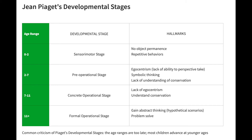Finally, a child gains the ability to understand symbols in the pre-operational stage. For example, a 5-year-old can understand that a stop sign is not just a red octagon, but a command to stop your car before continuing through the intersection.